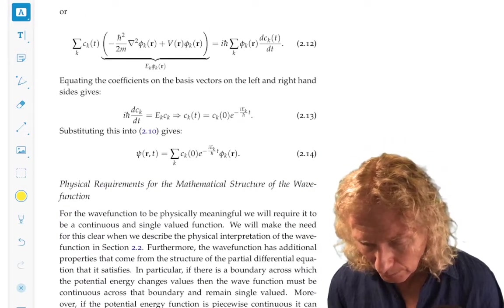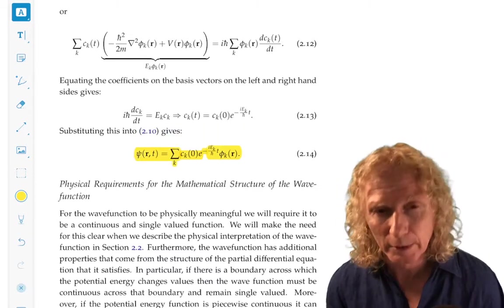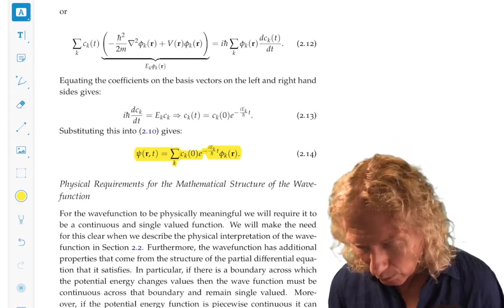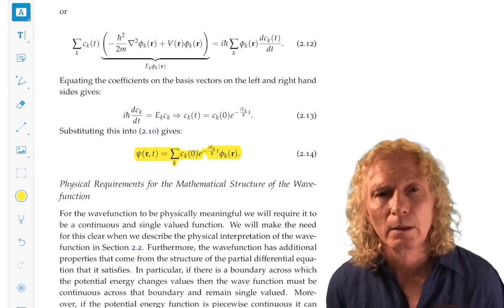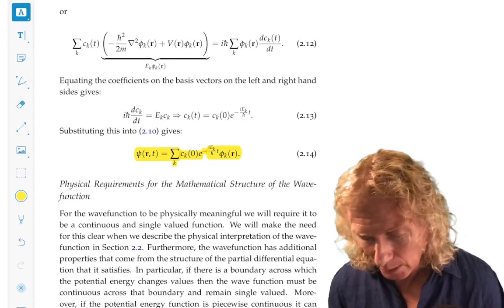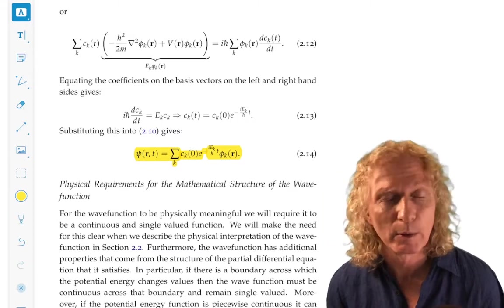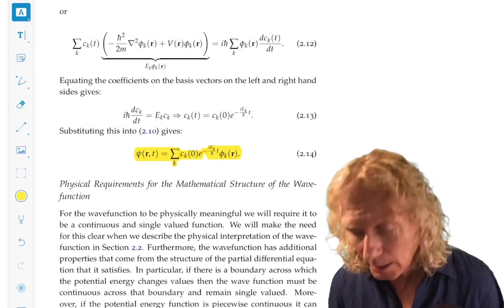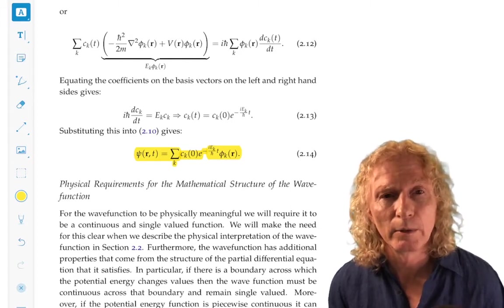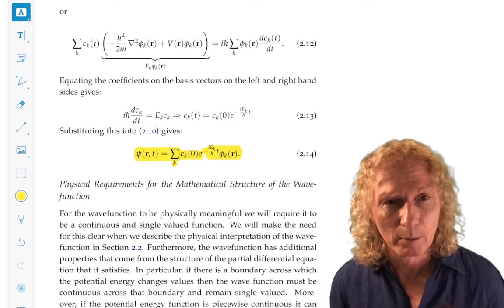And we're going to get the following form for the solution of the time-dependent Schrödinger equation: a sum over the eigenstates of the time-independent Schrödinger equation, where the coefficients have this nice form that we've already derived, and the Eₖ are the eigenvalues of the time-independent Schrödinger equation eigenvalue problem.